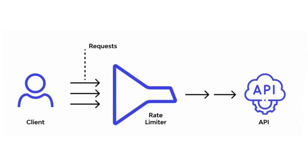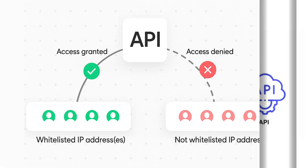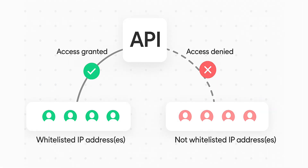Additionally, you could add rate limiting to prevent someone from flooding the API with too many requests, or implement IP whitelisting to only allow requests from trusted sources.